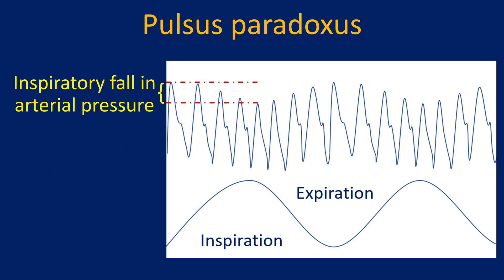A minimum of 10 mmHg fall in inspiratory blood pressure is taken as significant pulsus paradoxus. The fall is sometimes expressed as 15 mm paradox, 20 mm paradox, etc. In an extreme case, the pulse may totally disappear during inspiration, and then it is called pulsus paradoxus totalis.